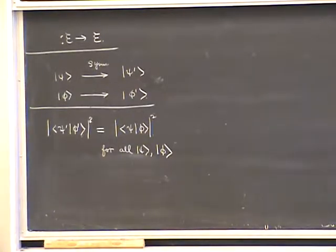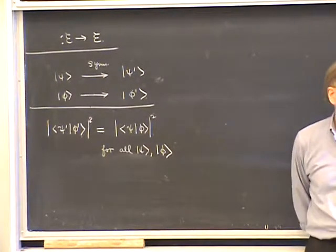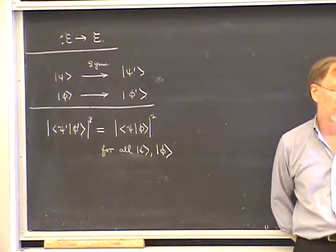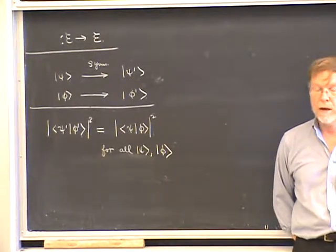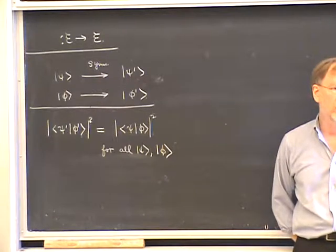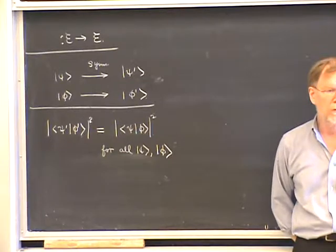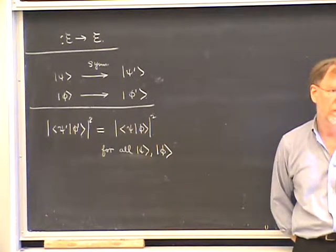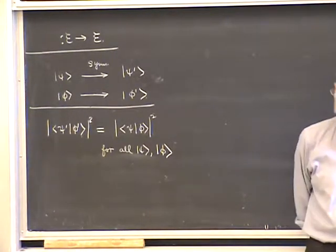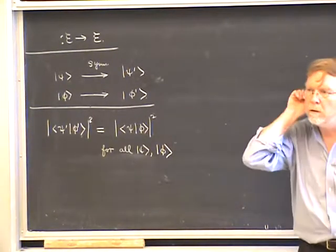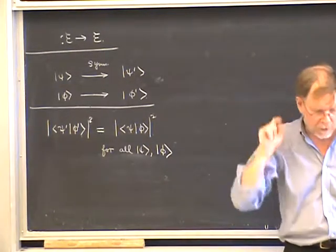The reason this is Wigner's requirement is that what you actually measure experimentally are probabilities, not amplitudes. Wigner is able to show that such a symmetry operation must either be a unitary operator or an anti-unitary operator—those are the only types of operations that can satisfy this. The only anti-linear symmetry we will encounter in this course is time reversal; all others—rotations, parity—are implemented by unitary operators.